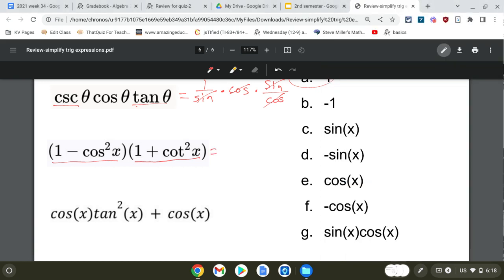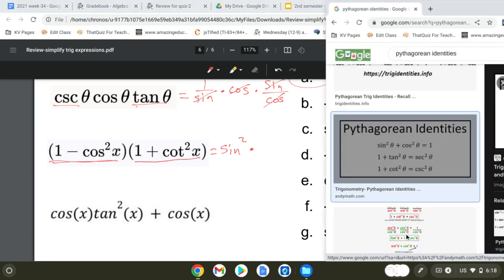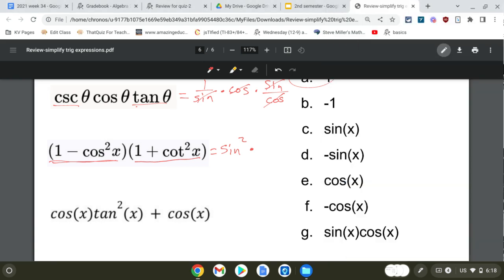Alright, so the first one, this first set of parentheses will turn into a sine squared. The second set of parentheses will turn into a cosecant squared. And sine and cosecant are reciprocals of each other. So you're just going to get a 1 out of this as well.